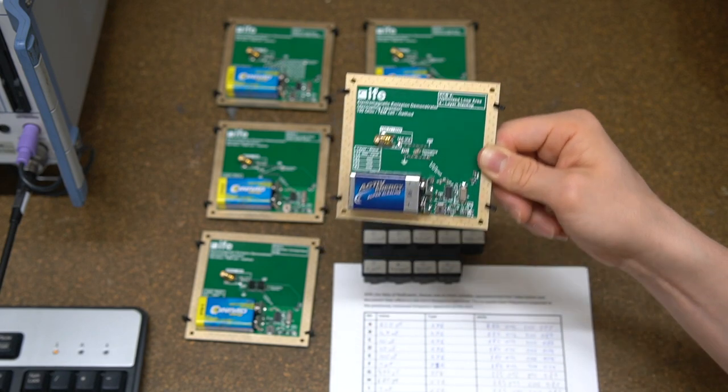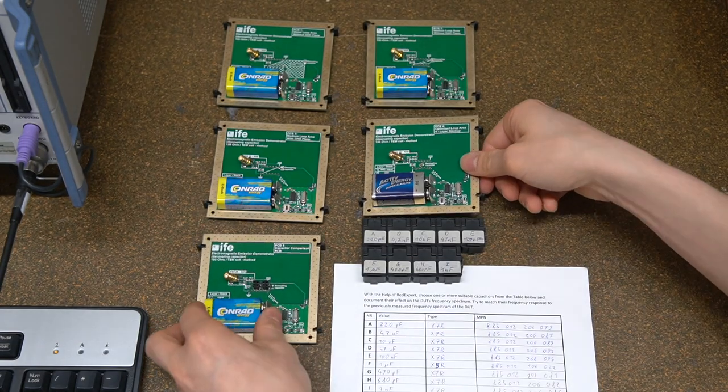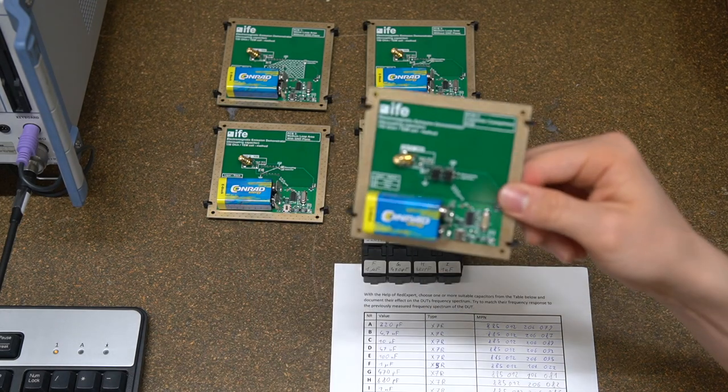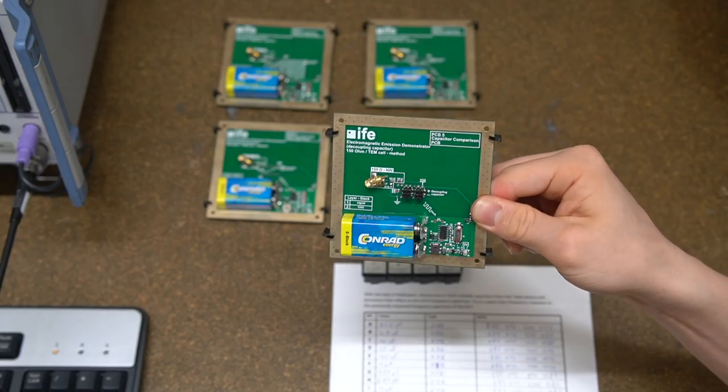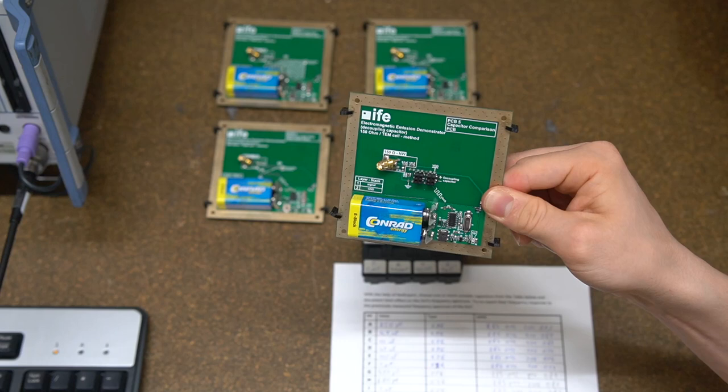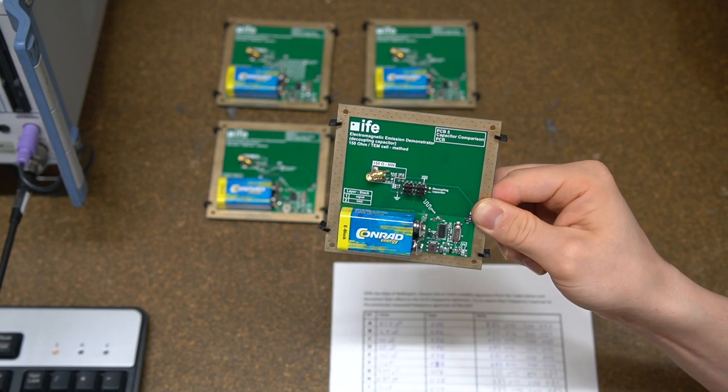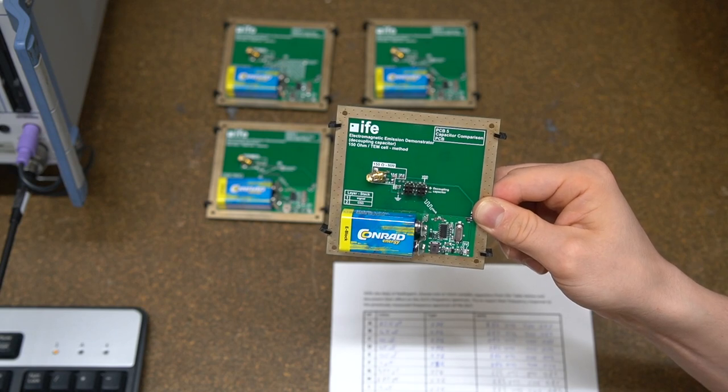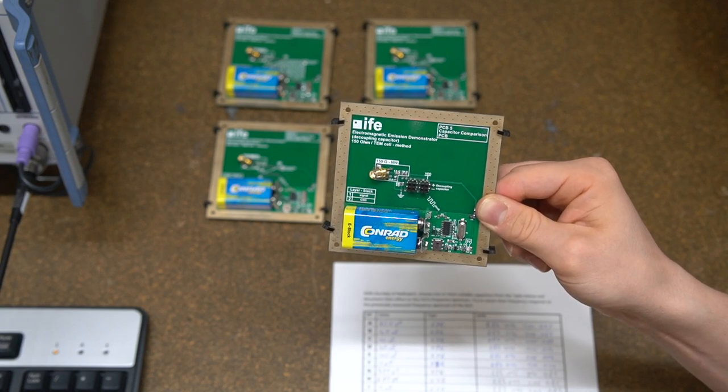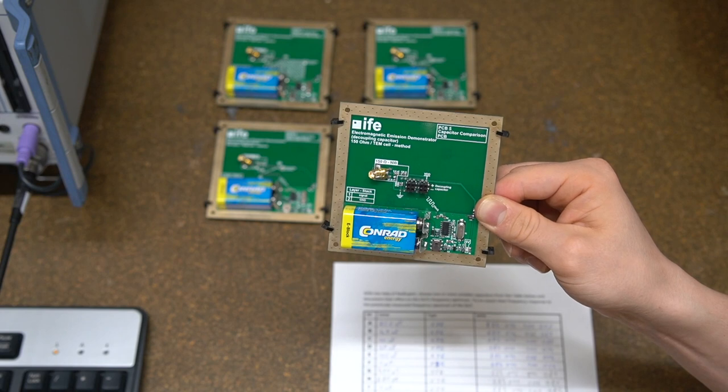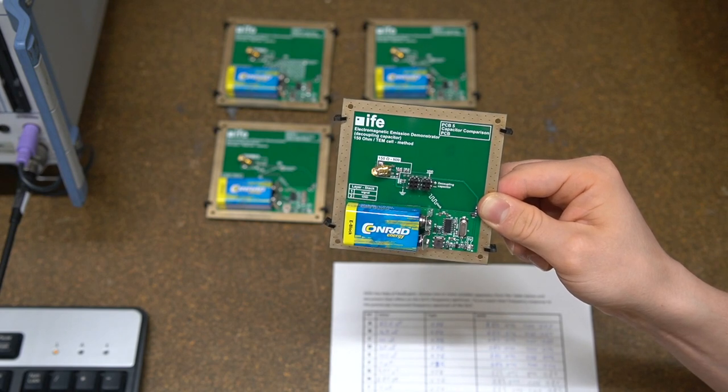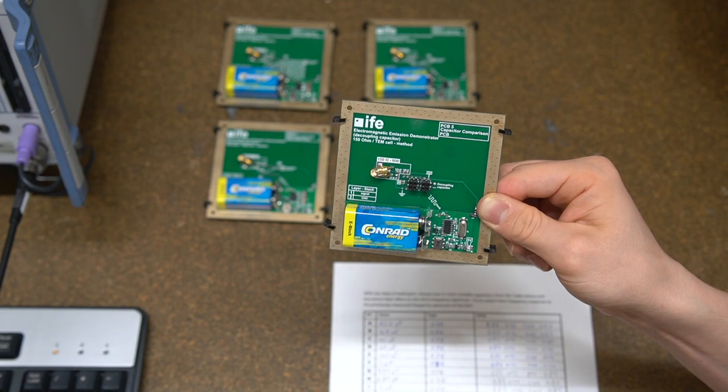Our fifth PCB is basically a variant of PCB three where we can change the coupling capacitor to any values we want. We have two ports where we can plug in those capacitors and we will change their values and the position to find the best solution for this problem.